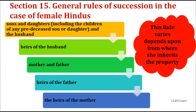Section 15 prescribes how a female's property is to be distributed. It has 5 entries. The first entry is children and husband. If no one is in the first entry, the property goes to heirs of the husband. If first and second entry persons are not there, it devolves upon mother and father. If they are also not there, fourthly it goes to heirs of the father, and lastly to heirs of the mother.